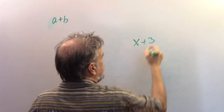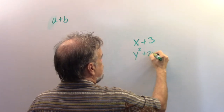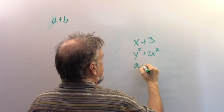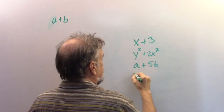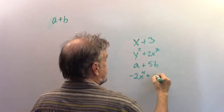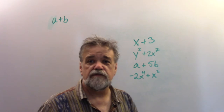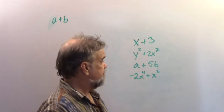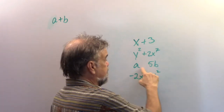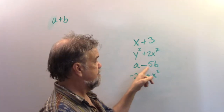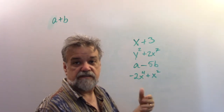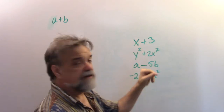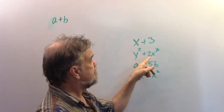Hey math students, today we're going to look at the binomial theorem. First off, what's a binomial? A binomial is something like x plus 3, or y-squared plus 2x to the seventh, or a plus 5b, or negative 2x to the fourth plus x-squared. All of those are binomials. The 'bi' comes from having two terms — one thing plus another thing, or one thing minus another thing.